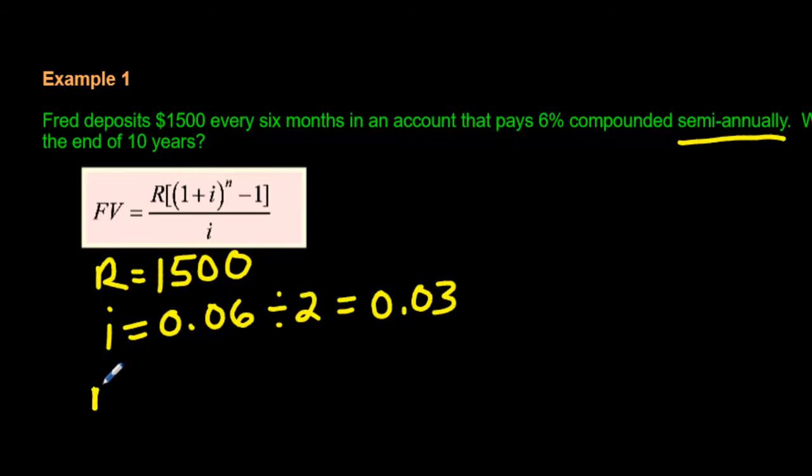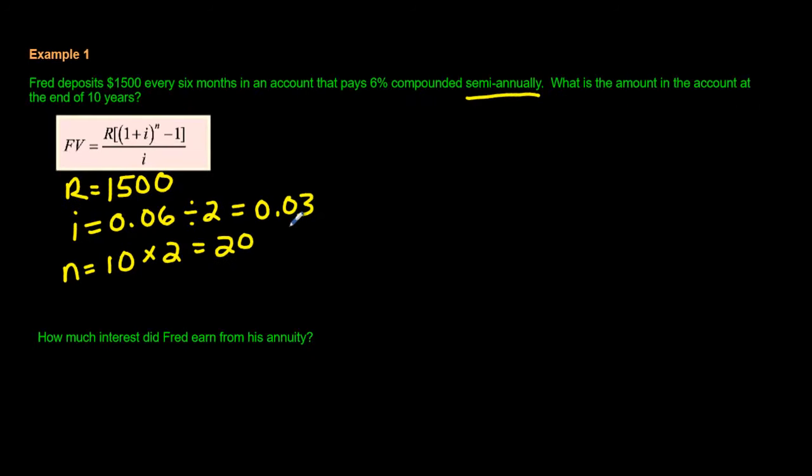And now for n. n is the number of years, there it is, 10 years, times the word. What is the word? Well, we already talked about that, it's 2. 10 times 2 is 20, and there we go. So let's plug these into the formula now and see if we can get our answer.